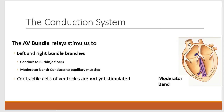The AV bundle relays the stimulus to the two bundle branches — one going down the left side of the septum and one going down the right side. Notice the stimulus has not yet reached the bulk of the ventricular myocardium. The cardiac skeleton around the sides of the septum prevents the action potential from spreading to the ventricles yet. It's important to bring this stimulus down to the apex, or bottom, of the heart first. The left and right bundle branches carry the action potential down toward the apex, where they relay the stimulus to the Purkinje fibers curving around the apex.